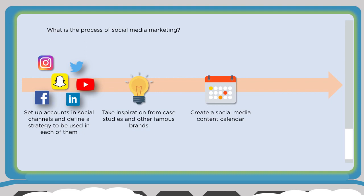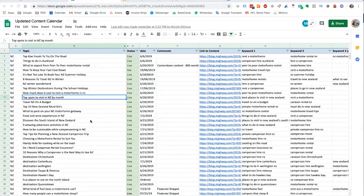Create a social media content calendar — this goes back to the beginning of the process. When establishing goals and the type of content you want to use, that should all be part of a content calendar. Then test, evaluate, and adjust your strategy — you're getting metrics, and if you post a video on Facebook and it's taking off in terms of likes and shares, consider doing another one that complements it. Here's a broad example of a content calendar in a spreadsheet.